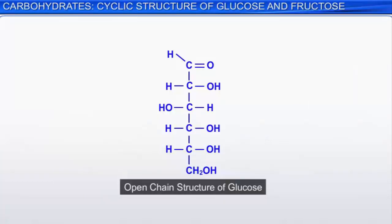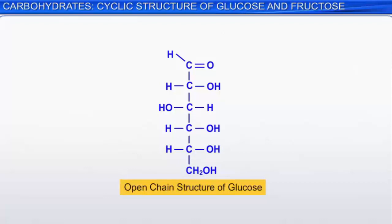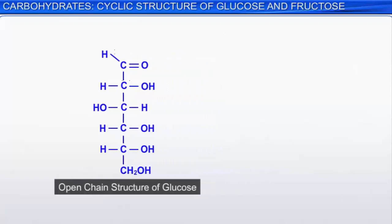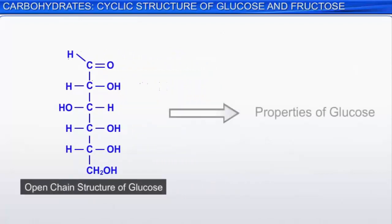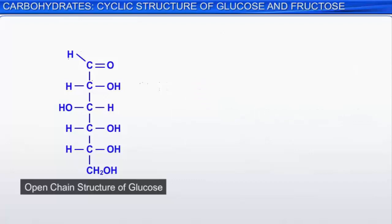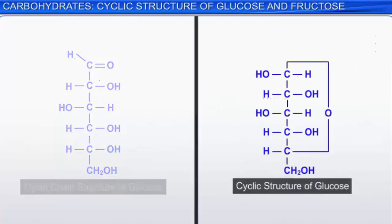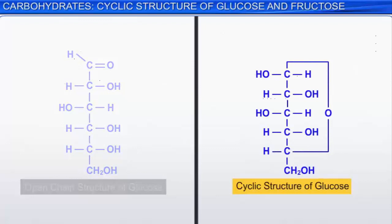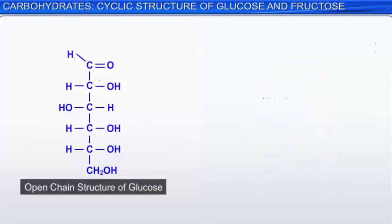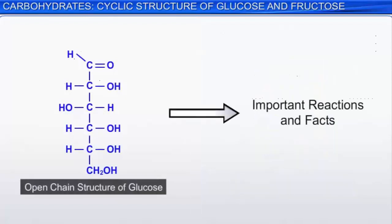We have already discussed the open chain structure of glucose on the basis of several reactions. However, it was observed that the open chain structure couldn't explain certain properties of glucose. These limitations were overcome by the establishment of the cyclic structure of glucose, proposed on the basis of several experiments and X-ray analysis. Let us first look at certain important reactions that were not explained by the open chain structure.